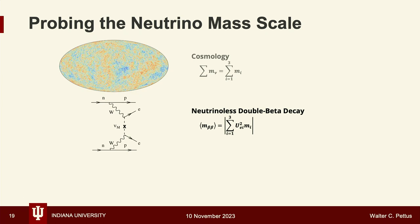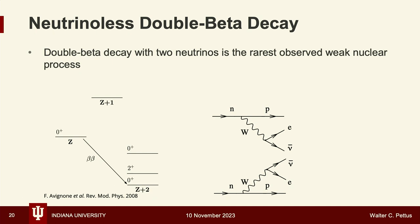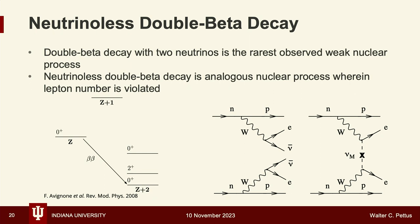The second approach: neutrinoless double beta decay. You take a nucleus that is energetically forbidden to decay by one step but allowed to decay by two, producing standard model-allowed double beta decay with a half-life of roughly 10^20 years — making it very hard to measure. That's why it took 50 years after Maria Goeppert Mayer postulated it before it was first measured. Now we've measured it in about 10 isotopes, and we're looking for the even harder neutrinoless version, where no neutrinos are emitted.